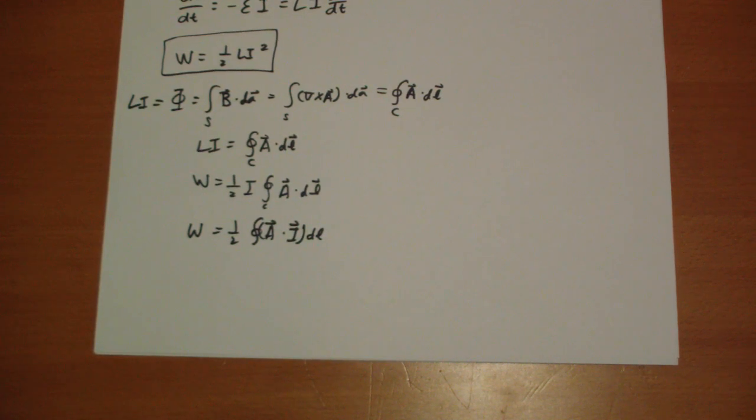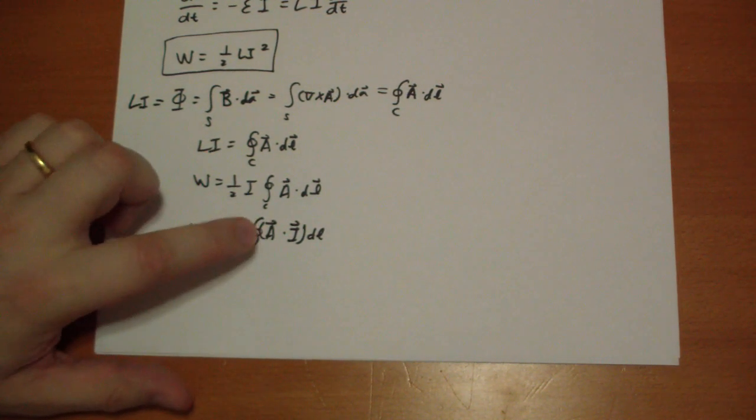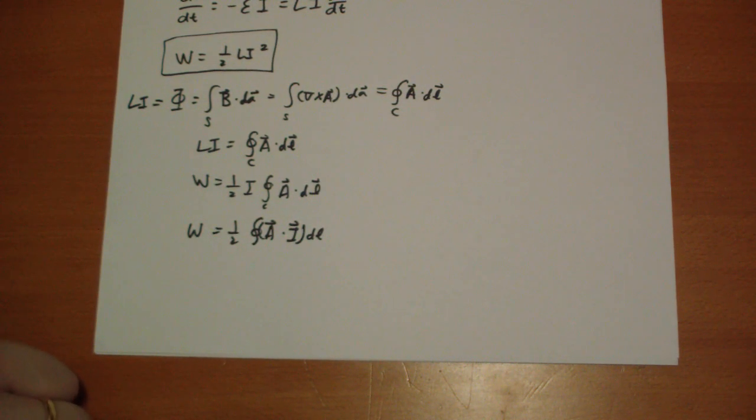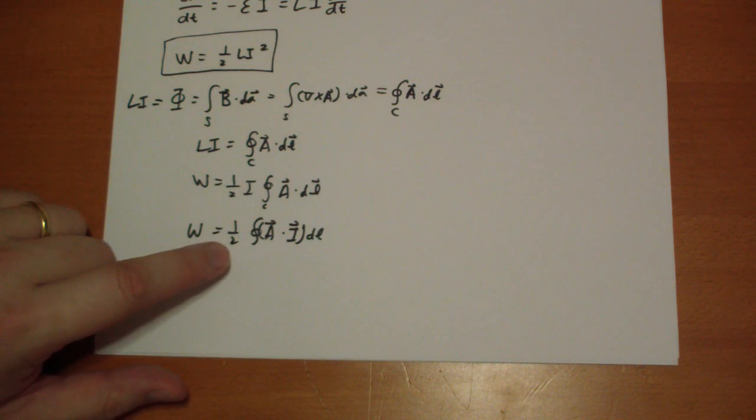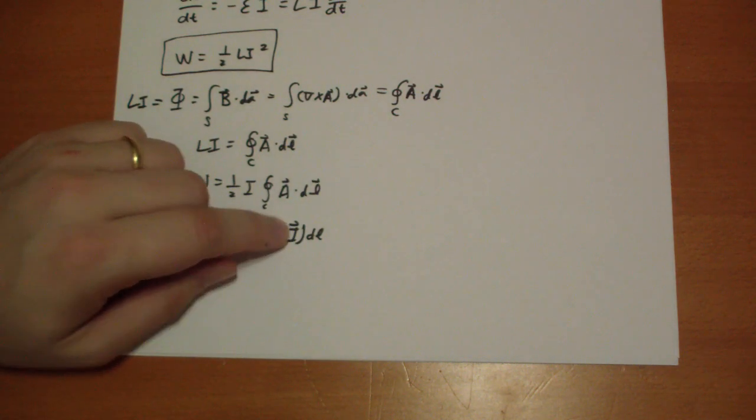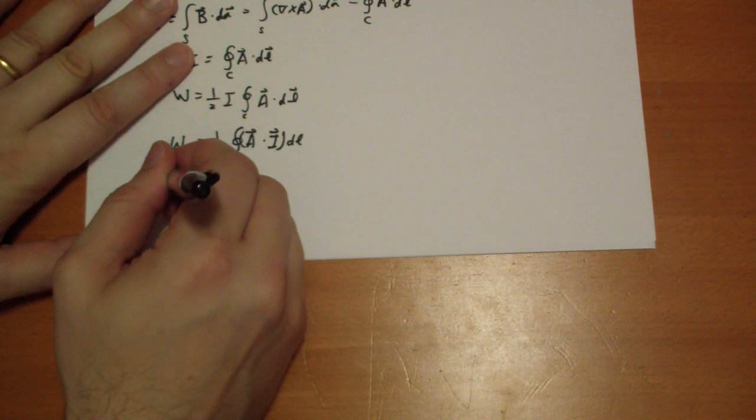times the length of each segment as we go around the loop. And this should be incredibly familiar. This looks like the analog of the one-dimensional version with the one-dimensional current. What if we had three dimensions? Well, indeed,